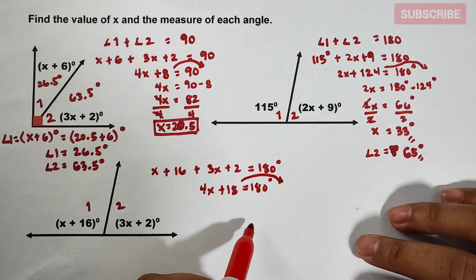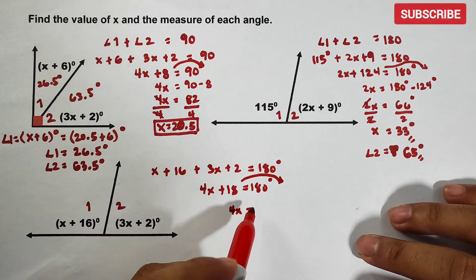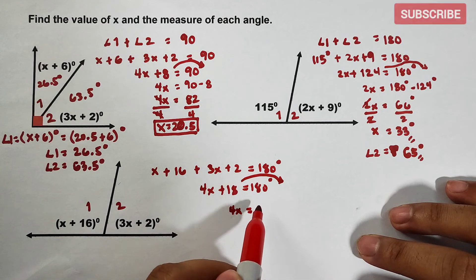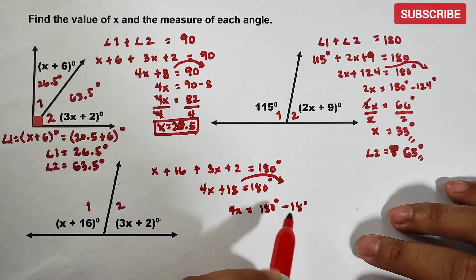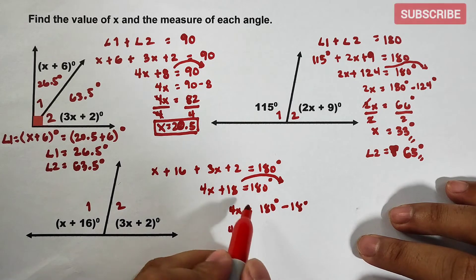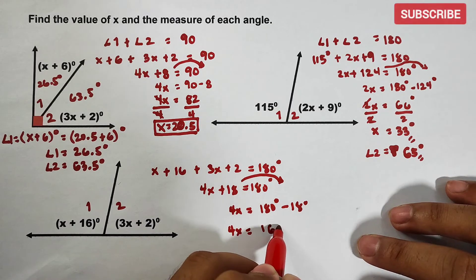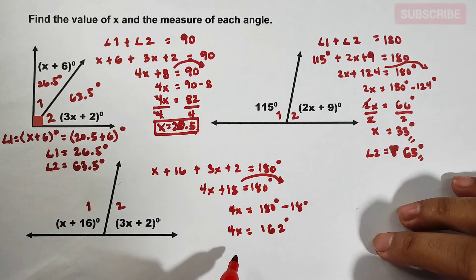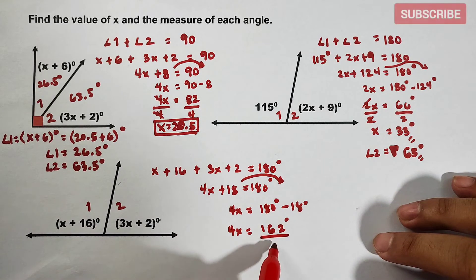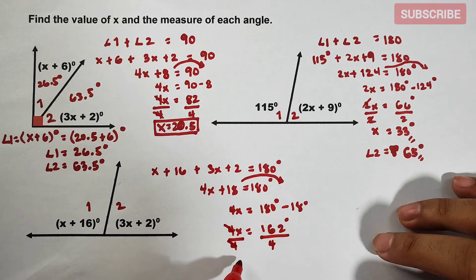Transpose this to the other side. This is 4x is equal to 180 degrees minus 18 degrees. So you have 4x is equal to 162 degrees. So what will happen here? Divide that in both sides by 4. As you can see, hindi siya magiging whole number. So your x here is equal to 40.5. This is the value of x.